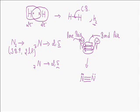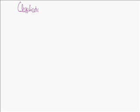The terminology we have just learned — lone pair and bond pair — will help us study the classification of covalent compounds. Now we are going to see the classification of covalent bonds.